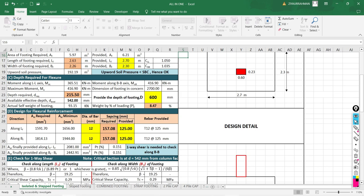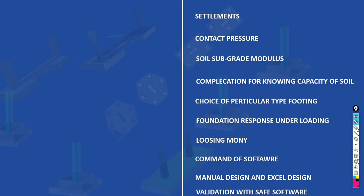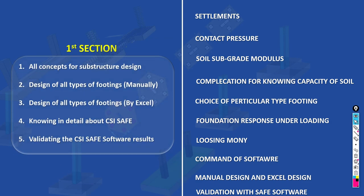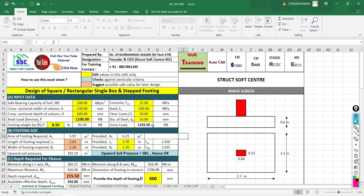In the first section, we cover basic concepts, manual design, and validate all manual designs with Excel sheets. After gaining confidence in dealing with all different types of foundations manually, we then look at the CSI SAFE software for substructure design. But again, when you come to software, you still need to validate the results. Let's consider an example: a single isolated foundation where the SBC of the soil is 200 kN/m², concrete grade is M25, column section is 230×600 mm, steel grade is Fe500.